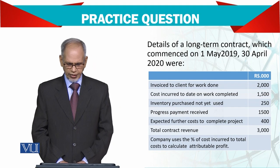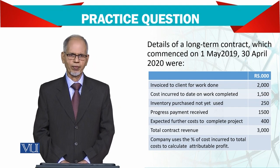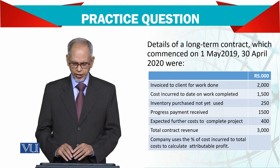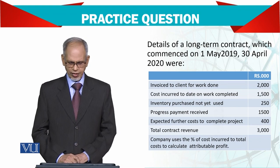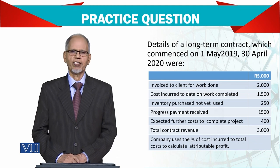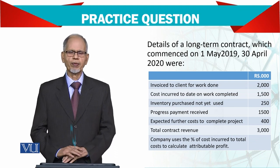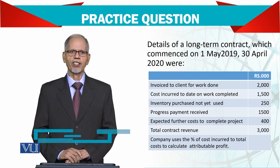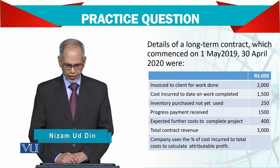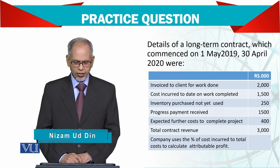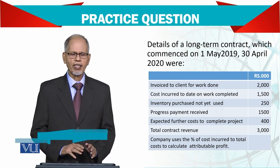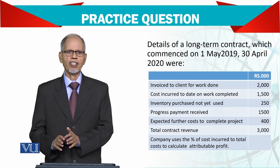Invoice to client for work done. Cost incurred to date on work completed — the cost incurred to date is 1.5 million. Inventory purchased but not yet used — you have bought this particular inventory for the project.